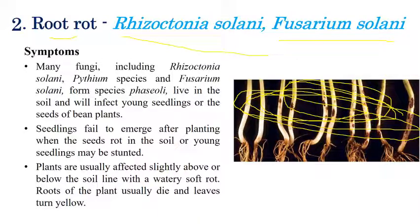Later, roots slowly start to die or decay. Once the roots decay, the plant cannot obtain the required water and nutrients, so leaves slowly start to turn yellow. In later stages, it completely fails — germination fails or entire seedlings may be stunted. The main symptoms begin above ground level with water-softening, then extend until all roots die and the plant cannot take up water.